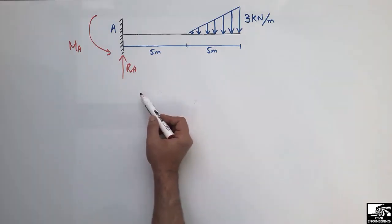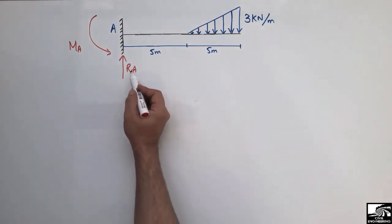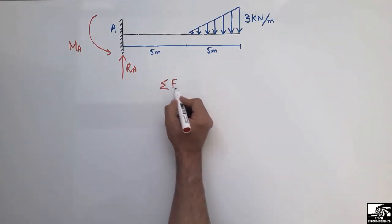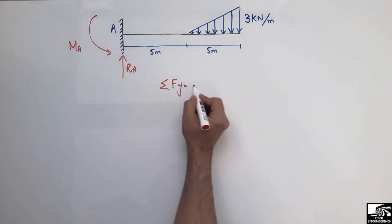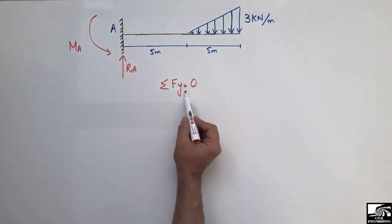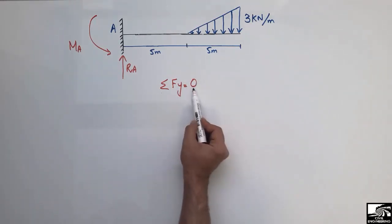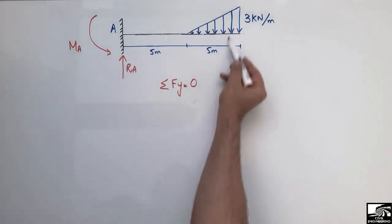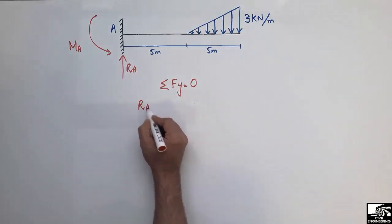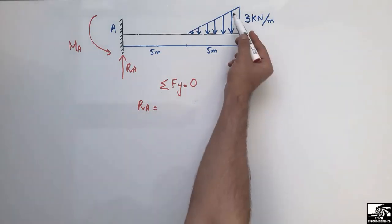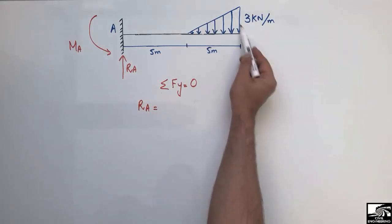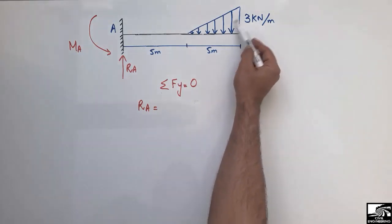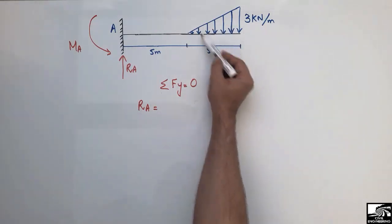To find RA, we use the equation: summation of vertical forces equals zero. RA is acting upward and the distributed load is acting downward. Since it is a triangular distributed load, we find the total load by calculating the area of the triangle.